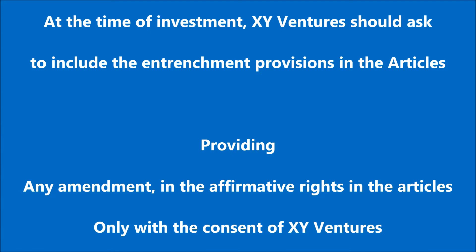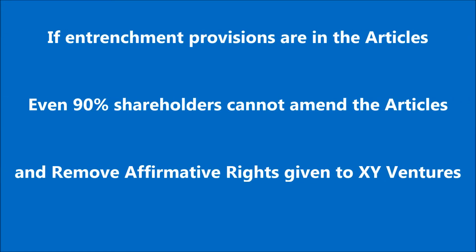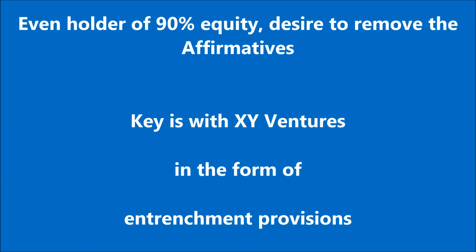These entrenchment provisions would provide that any amendment in the affirmative rights mentioned in the articles could only be done if the consent of XY Ventures has been obtained. So in that case, even if other 90% shareholders of ABC Private Limited desire to remove the affirmative rights from the articles, they cannot — because the articles already have the entrenchment provision which restricts the other shareholders from removing or changing the affirmative rights without the consent of XY Ventures. So even if 90% of shareholders wanted to change the articles, the company will have to take the consent of XY Ventures, which shall be at the discretion of XY Ventures.